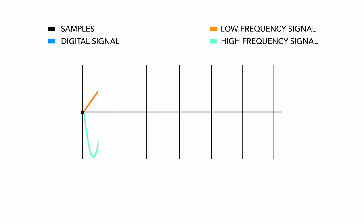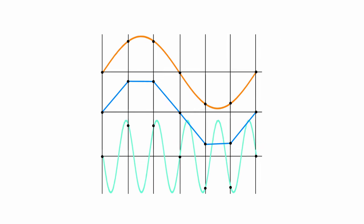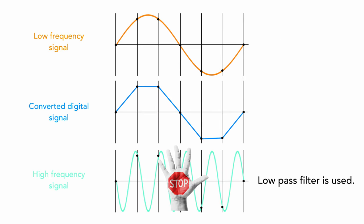If the original continuous signal contains frequencies higher than half the sampling frequency, the signal will be distorted by the phenomenon known as aliasing. You can see the same digital signal, but converted from different analog signals. To prevent aliasing, a low-pass filter is used to ensure that frequencies higher than half the sampling frequency do not enter the converter.